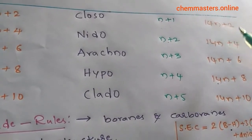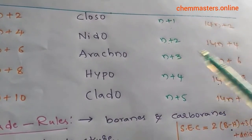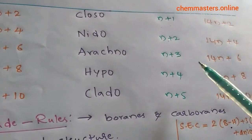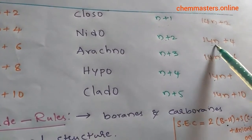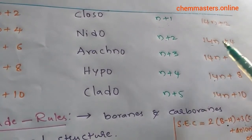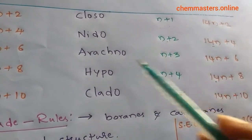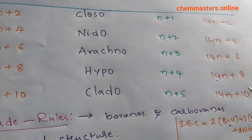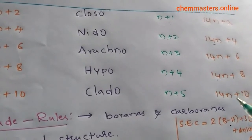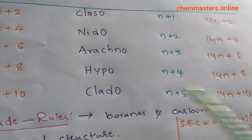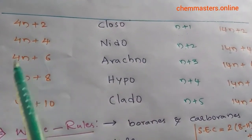Another approach is based on 14n+2, which is used to determine borane clusters for transition elements. If 14n+2, that is closo; 14n+4 is nido; 14n+6 is arachno; 14n+8 is hypo; and 14n+10 is clado.